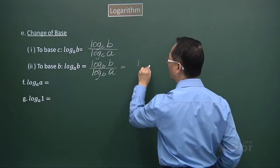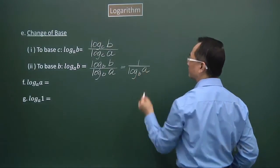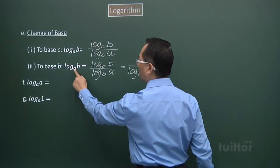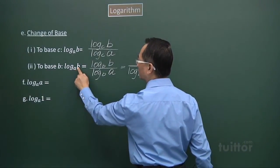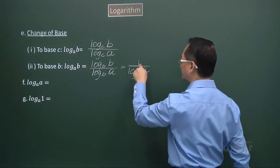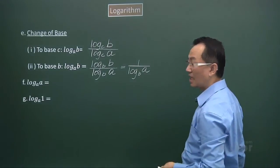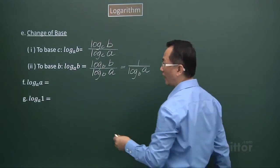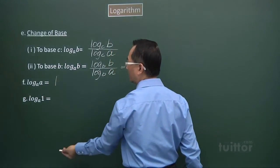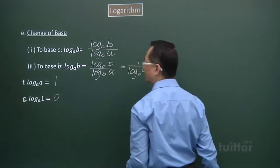So we have 1 over log base b a. Whenever we switch from log base a b to log base b a, the result is the reciprocal. For point F: log base a of a equals 1. For point G: log base a of 1 equals 0.